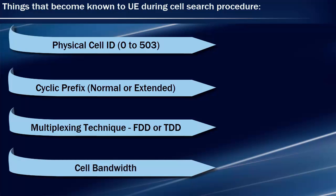Cell bandwidth in LTE can have many values such as 10 MHz, 20 MHz, etc. The Master Information Block broadcasts cell bandwidth, so in order to get cell bandwidth we must decode the Physical Broadcast Channel to read the Master Information Block. We will see how UE decodes the Physical Broadcast Channel.